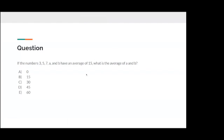Question. If the numbers 3, 5, 7, A, and B have an average of 15, what is the average of A and B?